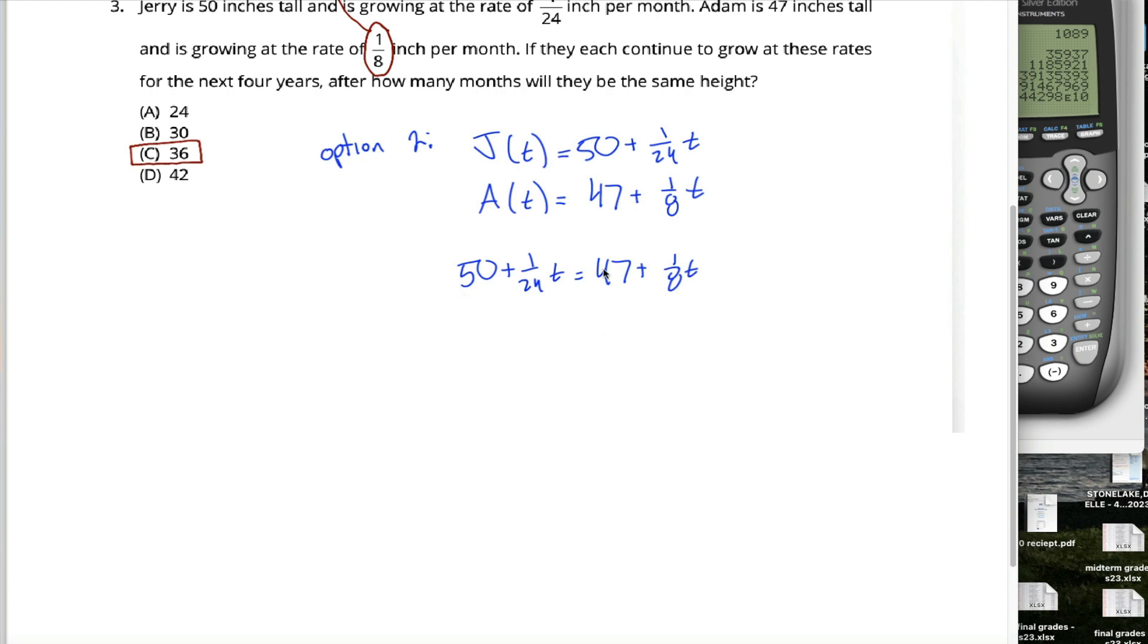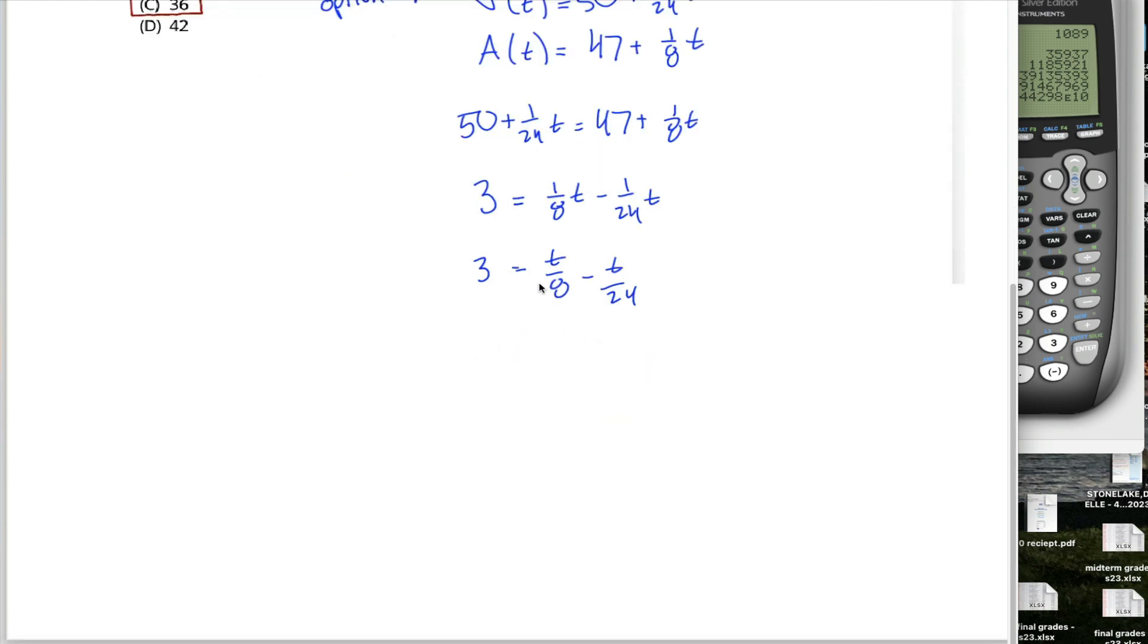Well, let's see. Maybe you'd isolate the variable. So subtract 47 from both sides. You're left with the three over on this side. Subtract 1/24th t from both sides. And I'd have 1/8th t minus 1/24th t, which maybe I'd rewrite as t over 8 minus t over 24. At which point, maybe I'd recognize subtracting fractions, I need a common denominator. So I'd multiply the top and the bottom of this fraction by 3 to get 3t over 24 minus t over 24. Now I can subtract these fractions. I have a common denominator of 24. I write that one time. 3 of these t's minus 1 of these t's leaves me with 2 of these t's. I got 3 is equal to 2t over 24. I can reduce the fraction on the right to call it t over 12. I can multiply both sides by 12 and get 36 is equal to t.